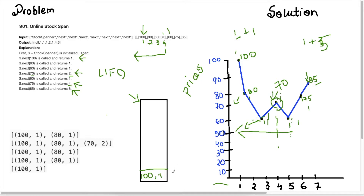Let's populate this stack manually. The first element we put in is 100 with a 1, because we include and count this value itself. The next element is 80. Before inserting, we check if 80 has a lower value in a previous day — the answer is no. So we don't pop anything; we just put in 80 with a 1, not including any other previous day's values.